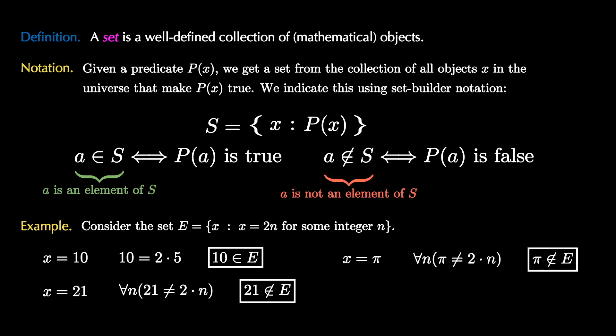Finally, a number like x equals 208 is 2 times 104, and 104 is an integer, so 208 is an element of E.